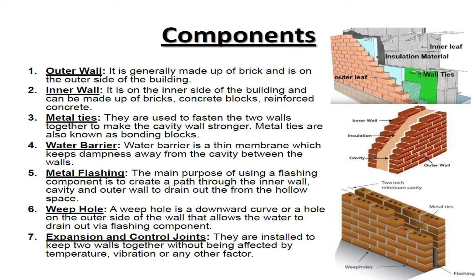Components of cavity walls. Outer wall: it is generally made up of brick and is on the outer side of the building. Inner wall: it is on the inner side of the building and can be made up of bricks, concrete blocks, or reinforced concrete. Metal ties: they are used to fasten the two walls together to make the cavity wall stronger. Metal ties are also known as bonding blocks. Water barrier: a water barrier is a thin membrane which keeps dampness away from the cavity between the walls.